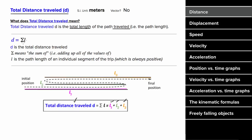That's why a formula for distance can be thought of as the summation of all the individual positive path lengths. The units for distance are meters. It is not a vector, and it's always positive or zero — it can never be negative.